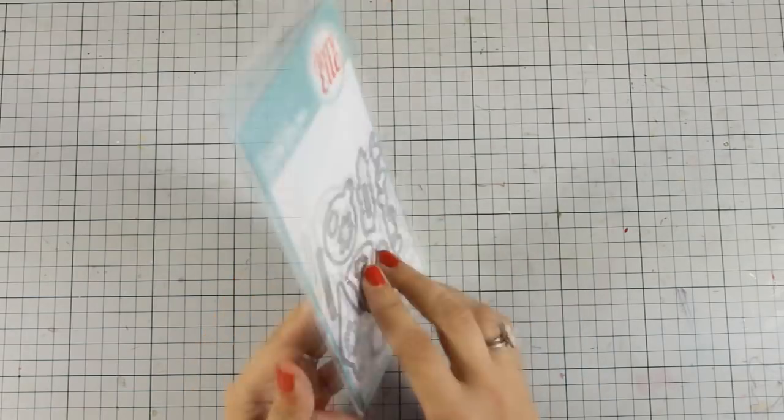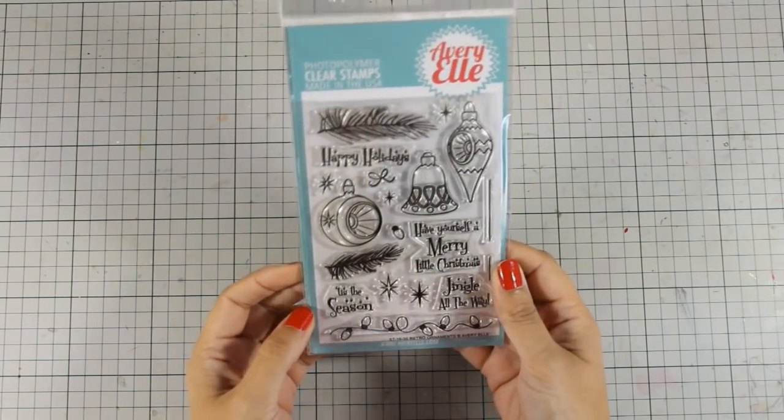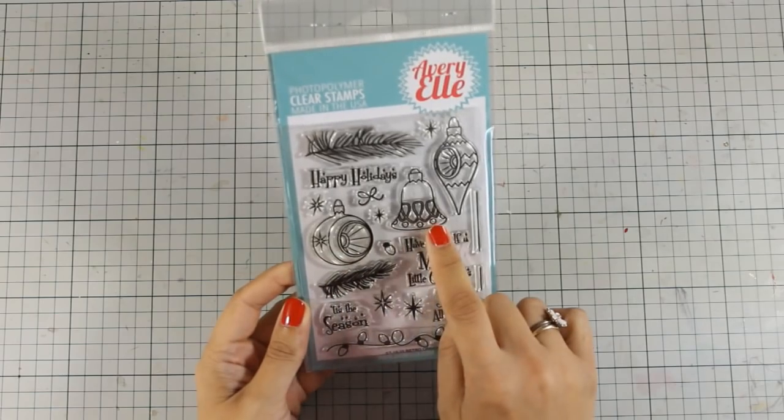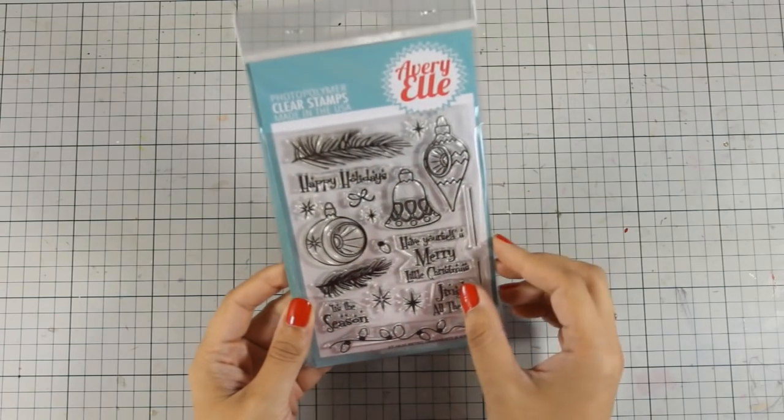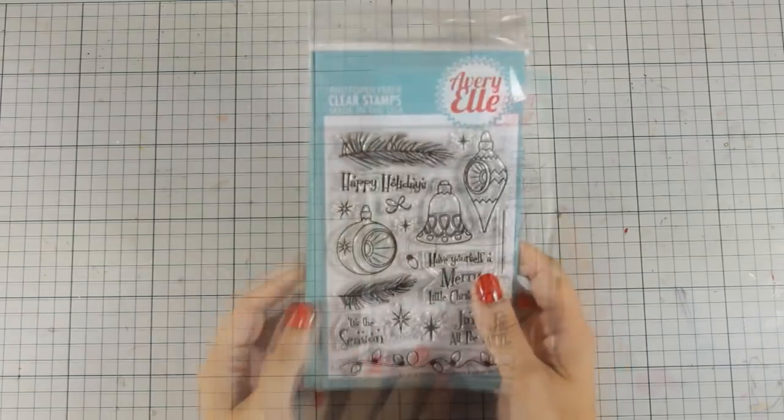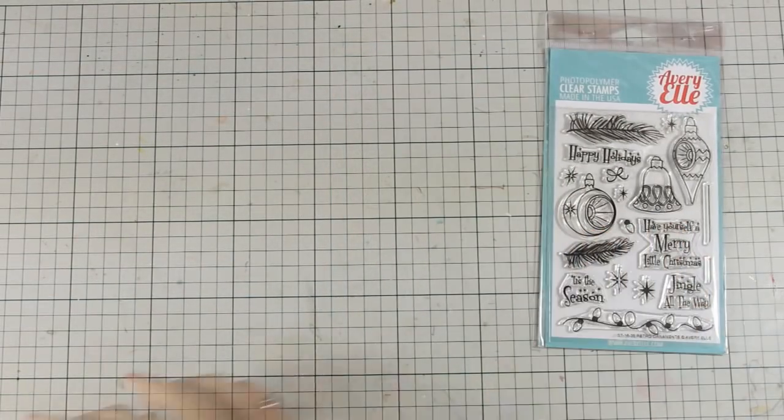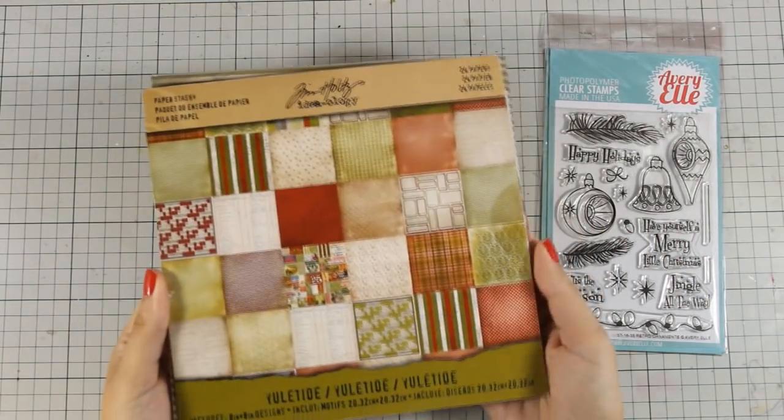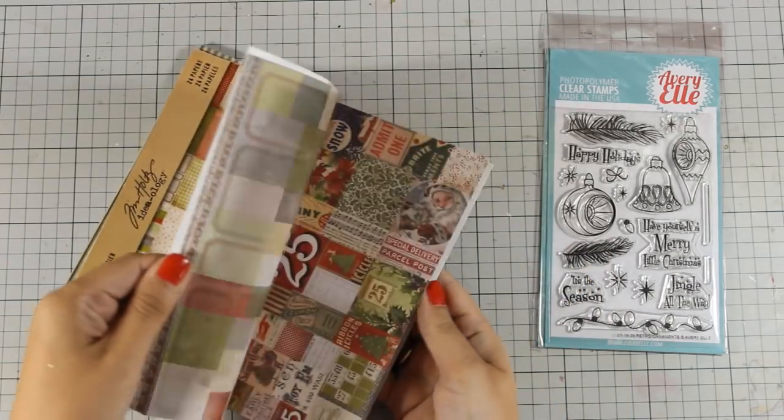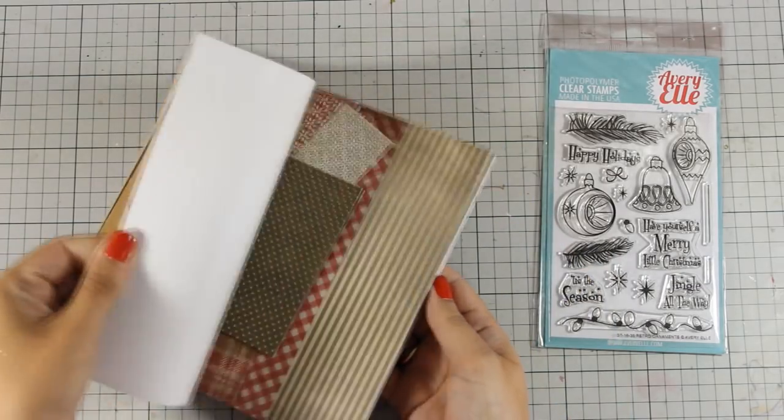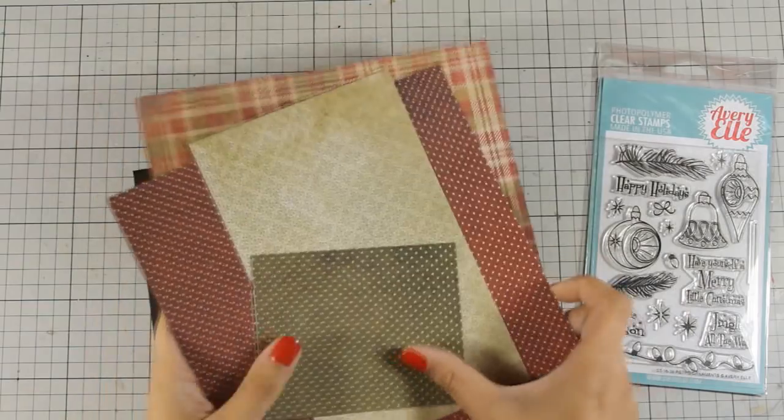There are also matching dies for this stamp set and it's full of beautiful ornaments as well as tree branches, little stars, a bow and many more little elements to create your lovely scene. And I thought that since these are retro designs it would be perfect to match them with pattern papers from this pattern paper collection by Tim Holtz.